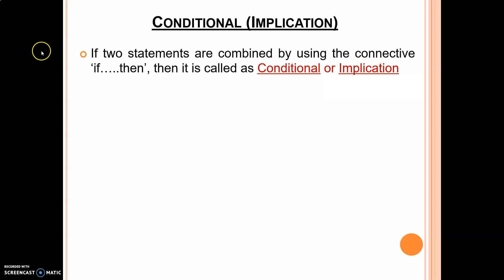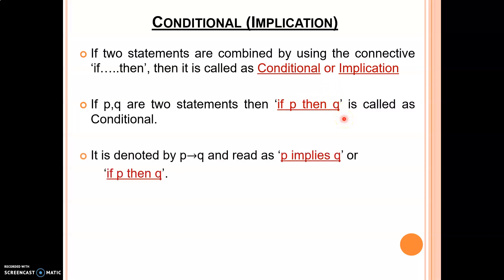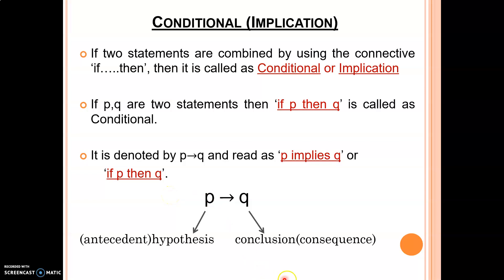If two statements are combined by using the connective 'if...then', then it is called a conditional or implication. If P and Q are two statements, then 'if P then Q' is called a conditional. You write 'if' at the beginning, then the first statement P, then the word 'then', then statement Q. It is denoted by P implies Q, otherwise written as 'if P then Q'. In P implies Q, P is called the antecedent and Q is called the conclusion or consequence.